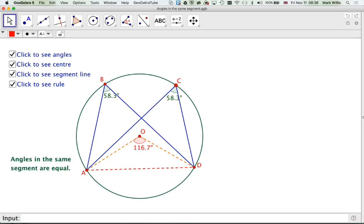If this angle here is theta, then this angle will also be theta, and that's because this angle here, in both cases, is two theta. And the rule is called angles in the same segment are equal.